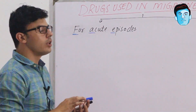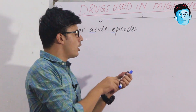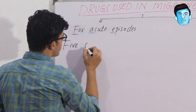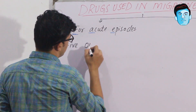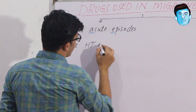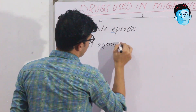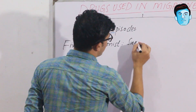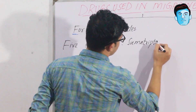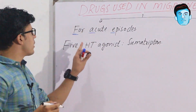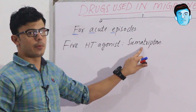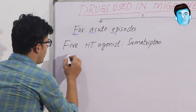F stands for 5-hydroxytryptamine agonist, which contains sumatriptan. So we have 5-hydroxytryptamine agonist including sumatriptan as the first class of drugs used in acute migraine episodes.